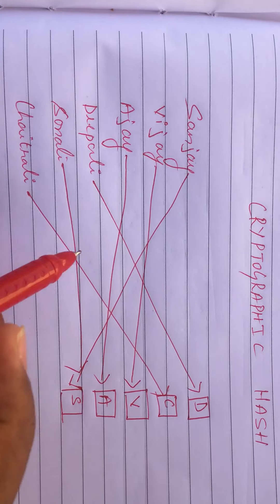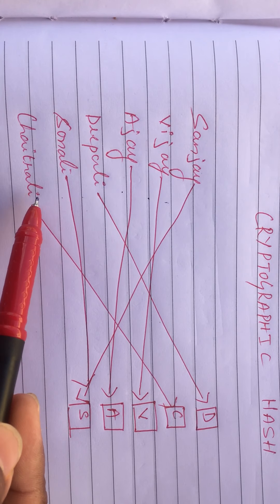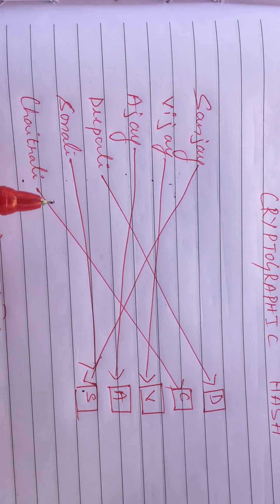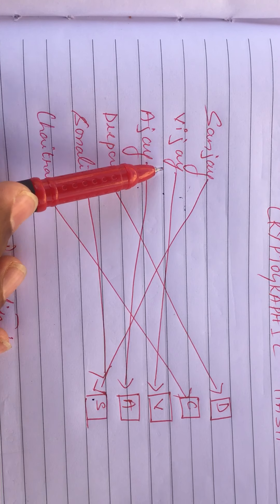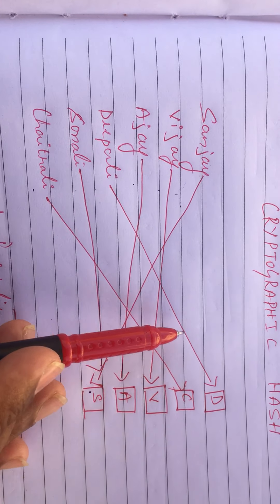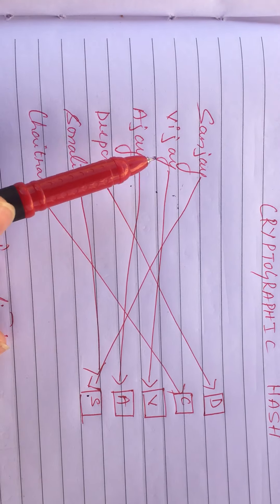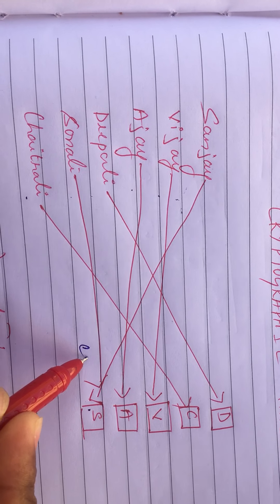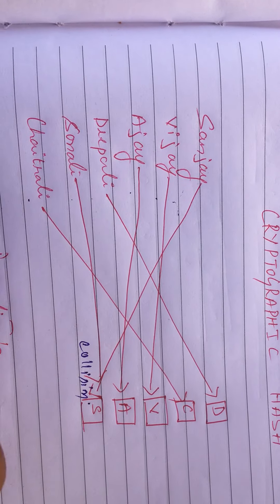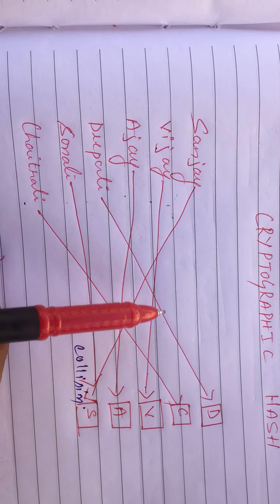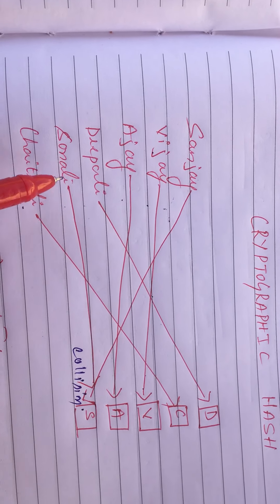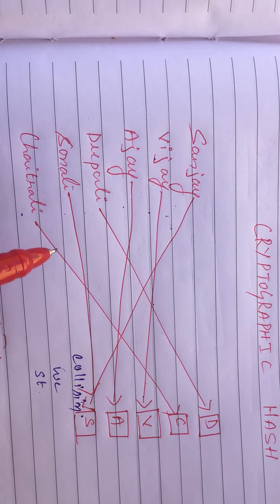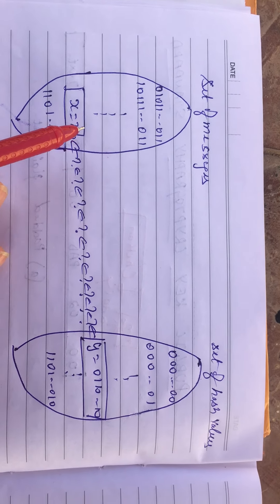For example, I have taken a few names: Sanjay, Vijay, Ajay, Dipali, Sonali, and Chaitrali. What I have done is mapped each name to the first alphabet. Sanjay maps to 's', Vijay to 'v', Ajay to 'a', Dipali to 'd', and so on. Since Sanjay and Sonali both start with 's', they both map to 's' — this forms a collision. Vijay maps directly to 'v', which is a one-way property, whereas Sanjay and Sonali mapping to 's' forms a weak or strong collision.